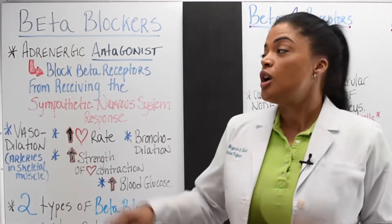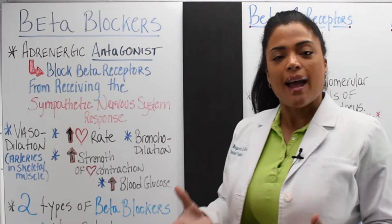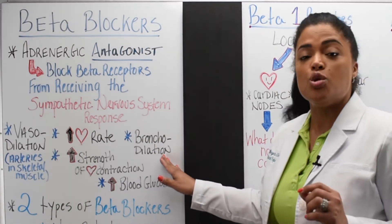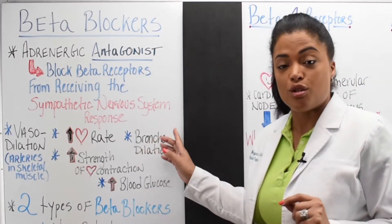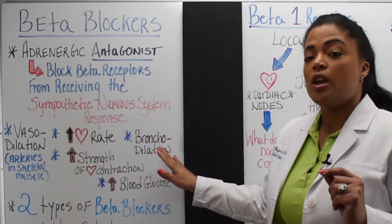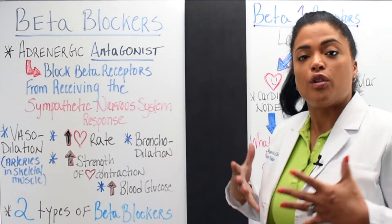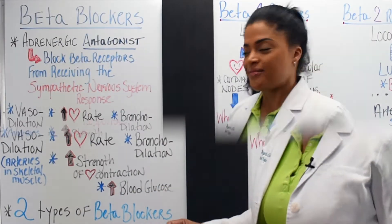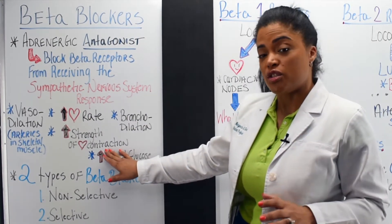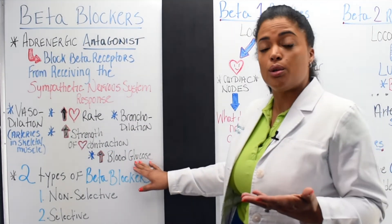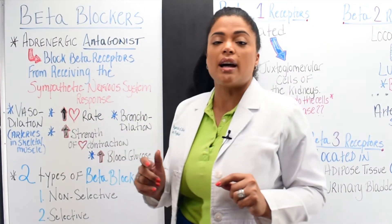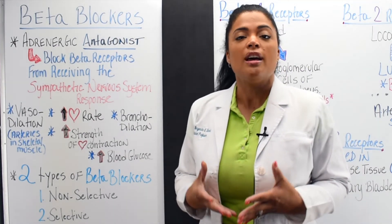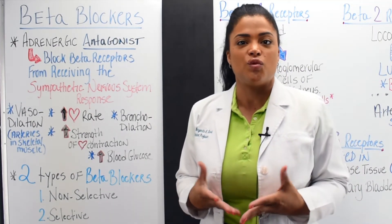Just to review: make sure you understand what the word antagonist means, because it goes against a normal response. The normal response of sympathetic nervous system stimulation is to increase the heart rate, bronchodilate for more open airways, increase the strength of heart contraction, increase blood glucose, and vasodilate the arteries of skeletal muscle so they have more room for extra blood flow from stimulation of these receptor sites.